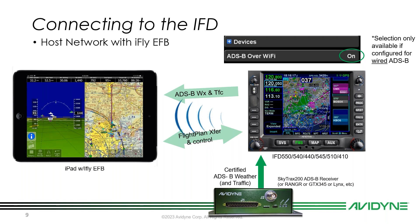For traffic and weather: the iFly EFB can receive traffic and weather through the IFD via your certified ADS-B receiver — whether that's a Skytrax 200, FreeFlight Ranger, GTX 345, Lynx NGT 9000, or others. If you have a hardwired ADS-B receiver, you'll see an 'ADS-B over Wi-Fi' toggle in the settings — make sure that is turned on. That allows the IFD to stream traffic and weather over the network to your tablet.